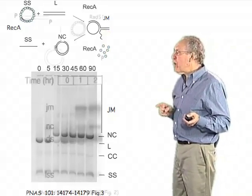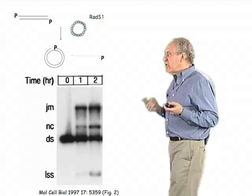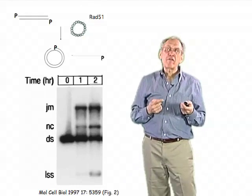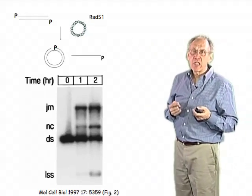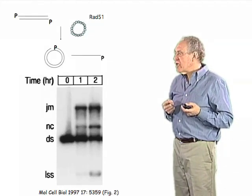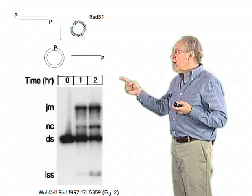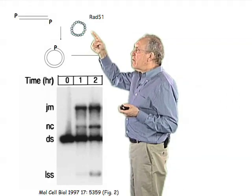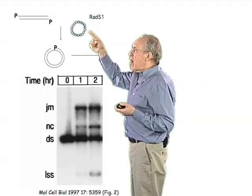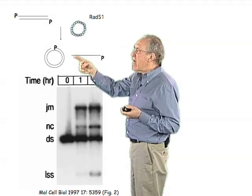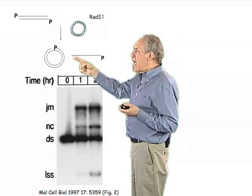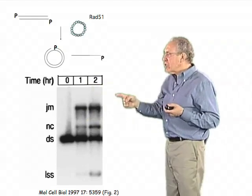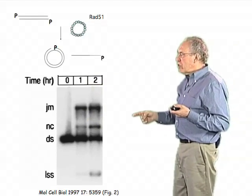Probably an easier way to see this is by using a different approach — using radioactive phosphate to label the ends of the linear double-stranded DNA molecule. Again, there's a circle which is the single-stranded DNA with Rad51 protein coating it. It's going to carry out this reaction to form a nicked circle and a displaced linear strand, and you can see all of those things separated on a gel.